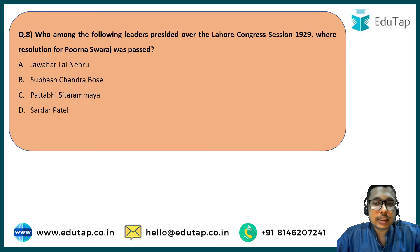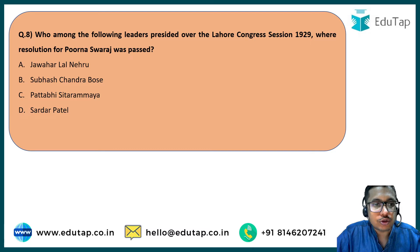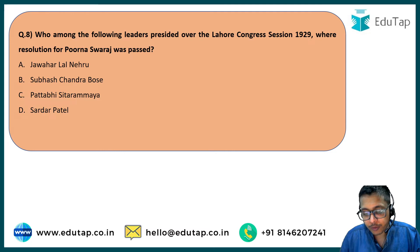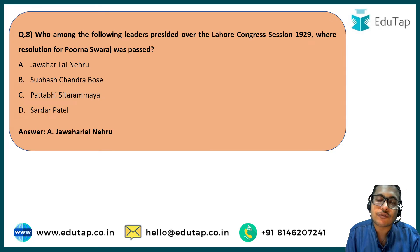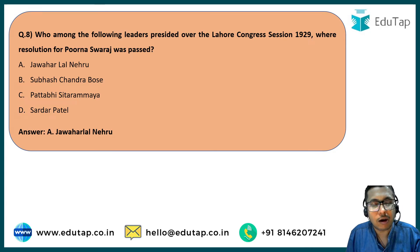Question number eight is a relatively straightforward question. Who among the following leaders presided over the Lahore Congress session of 1929, where the resolution for Poorna Swaraj was passed? The Congress session of 1929 happened in Lahore on the banks of River Ravi, and the resolution of Poorna Swaraj — complete independence — was passed there. This session was presided over by Jawaharlal Nehru. He belonged to the younger generation of Congress and was in favor of complete removal of British rule. The Poorna Swaraj resolution was passed in 1929 under his presidency.